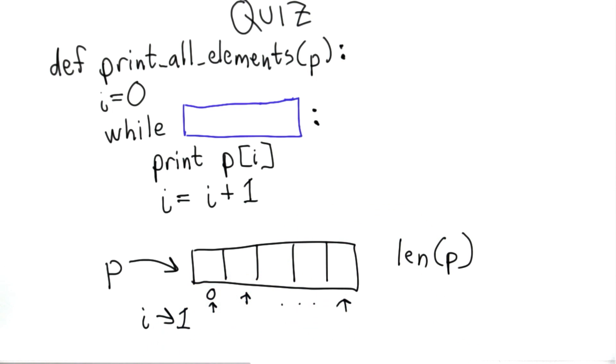The highest index in the list is not the value of len because the list starts from 0. The highest index is the value of len(p) minus 1.